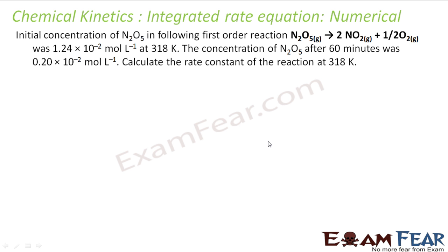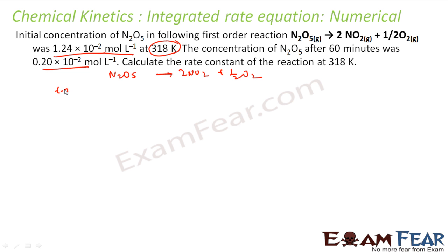This is a first order reaction where N₂O₅ gives NO₂ and oxygen. The initial concentration was 1.24 × 10⁻² moles per liter at 318 Kelvin. The concentration of N₂O₅ after 60 minutes was found to be 0.20 × 10⁻² M.